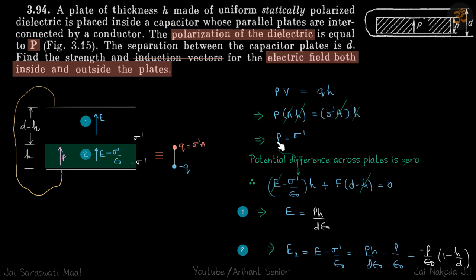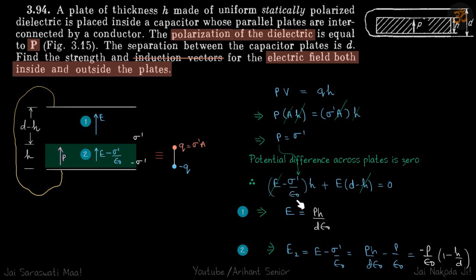So now we know that E inside is E minus P/ε₀. We'll express the electric field in terms of P and apply the condition that the potential difference is zero when going from one plate to the other. From the first region to the dielectric, the contribution to potential is (E minus σ'/ε₀) times H.